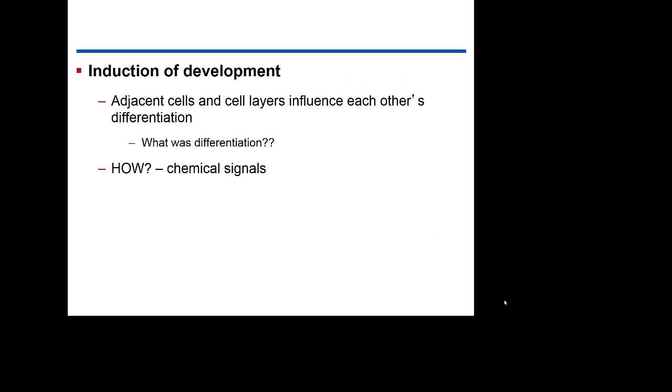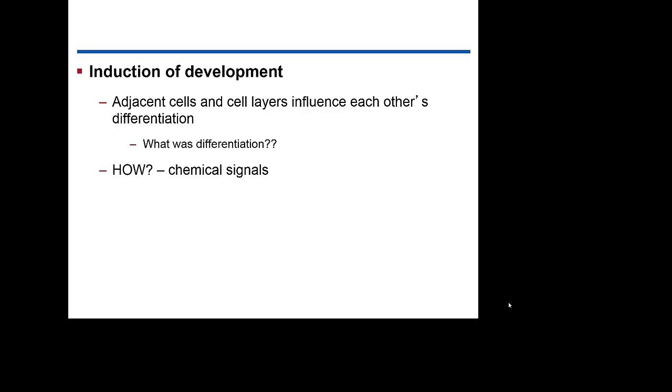It may not surprise you that it's all chemicals. Like any of the hormone regulation we talked about before, the chemical signals are some of the most important for development, particularly when we look at the association and linking of cells and tissues and organs to organ systems. These chemical signals must be delivered in the correct sequence and to the correct cells — otherwise development doesn't occur properly.